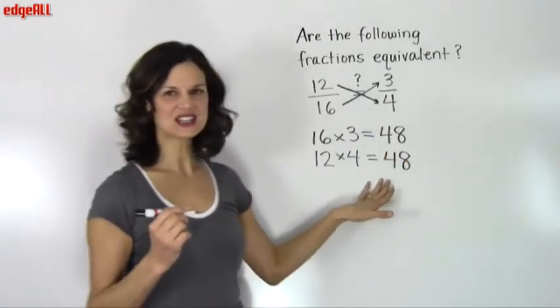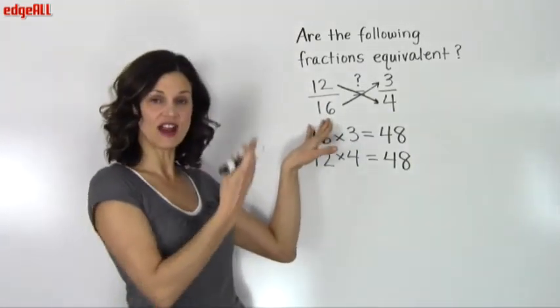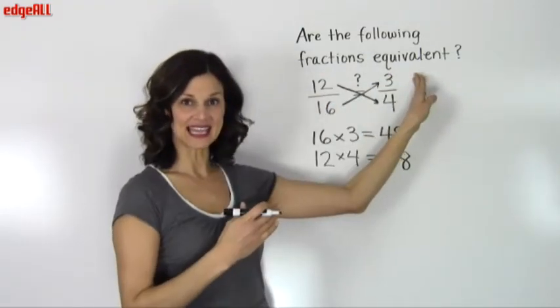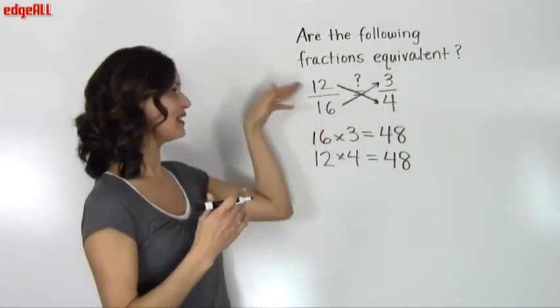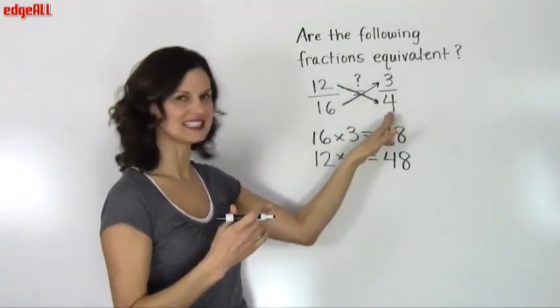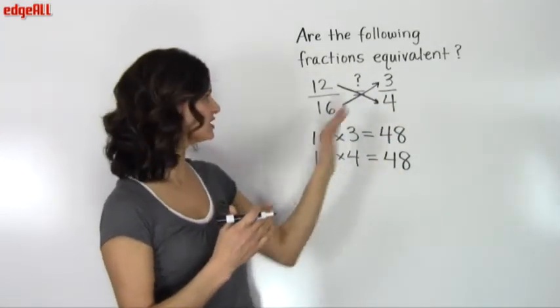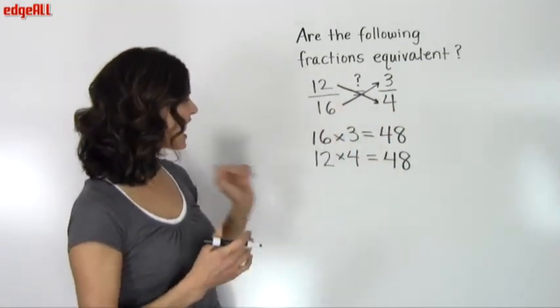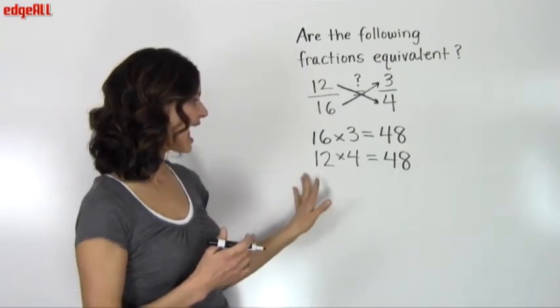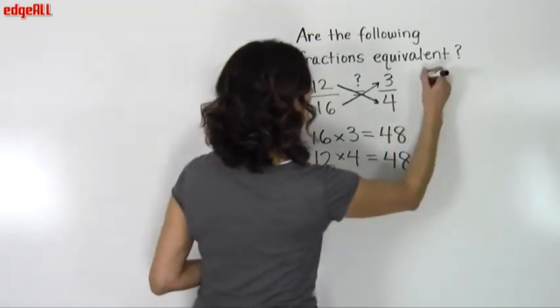You want to make sure that you have multiplied the denominator from the first fraction with the numerator of the second and then switch places, the numerator of the first fraction with the denominator of the second. You need to make sure that you're crossing when you multiply these numbers. And sure enough, we have 16 times 3 equals 48 and 12 times 4 equals 48.